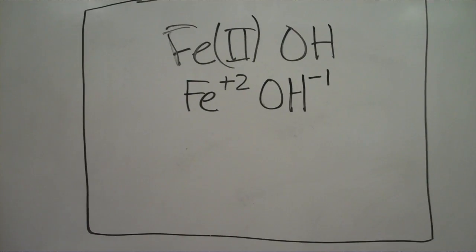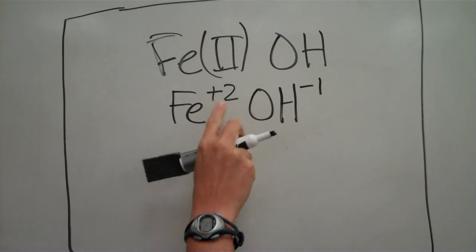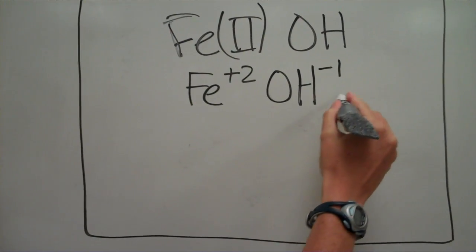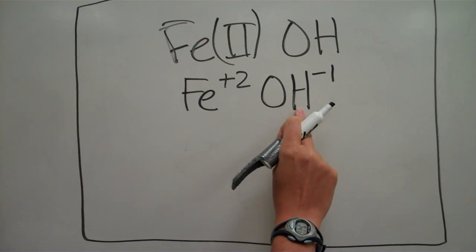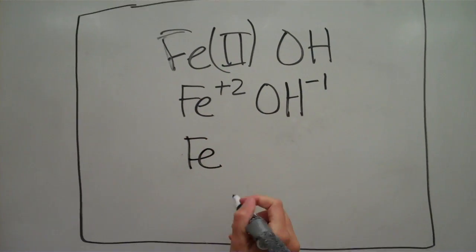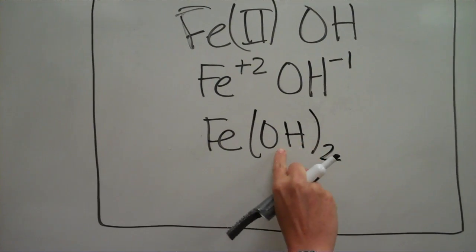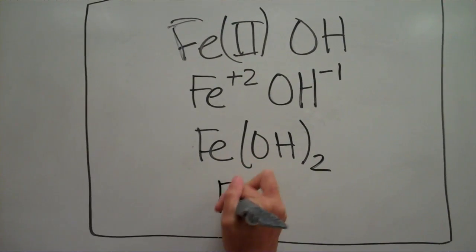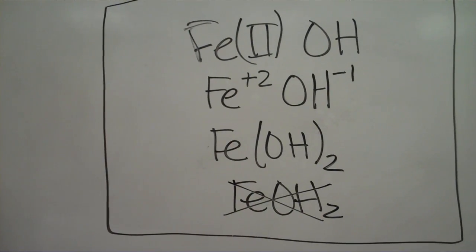Just as with other ionics, these have to balance out. We have two positive charges, so we need two negative charges. The temptation is to just stick the 2 down after OH, but because we have a polyatomic, we need to make sure the 2 applies to both the H and the O. So the correct way to write this is Fe(OH)₂ — you need the parentheses around your hydroxide. Without parentheses would be wrong.